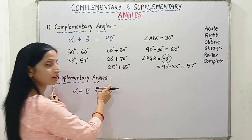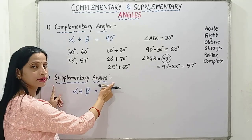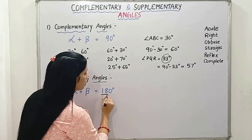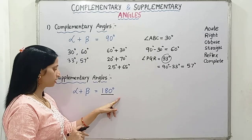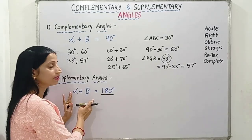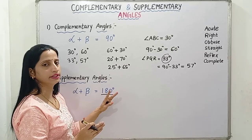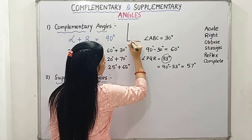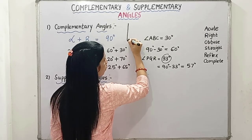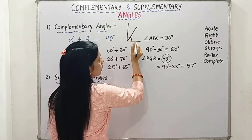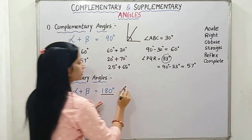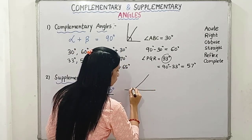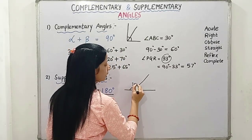Now let's come to supplementary angles. Supplementary angles means two angles are said to be supplementary angles when their sum is 180 degrees. So let's take again alpha and beta — when we will add these two angles, their sum always should be 180 degrees. In complementary, it was 90 degrees. So all the two angles which add up to 90 degrees are known as complementary angles. Similarly, all the two angles which add up to 180 degrees are known as supplementary angles.